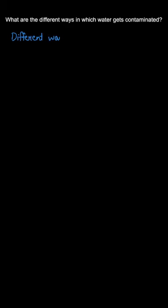Hi, the question says: what are the different ways in which water gets contaminated? Let us write the answer for this. The different ways in which water can get contaminated are of three types.